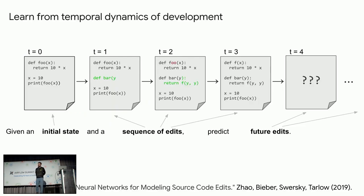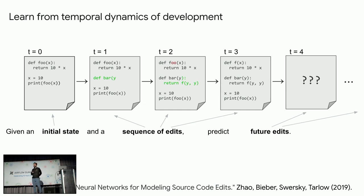One early thing we looked at in this line was the temporal dynamics of edits. We had a paper looking at: what if we take fine-grained snapshots of code as it evolves, as people write it, and look at the changes being made? You can see almost a temporal dynamics of what's happening as people make changes. You can disambiguate cases where code is in some intermediate broken state — using the history might give information about what the developer is in the process of doing and therefore what they're going to try to do next.